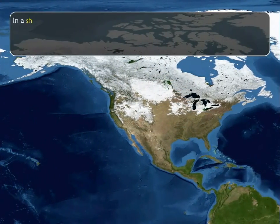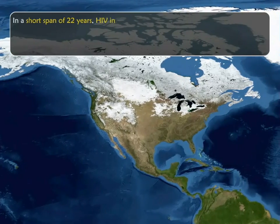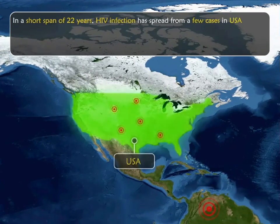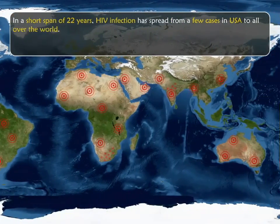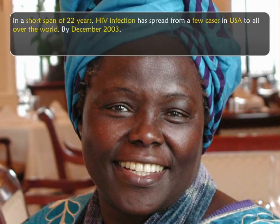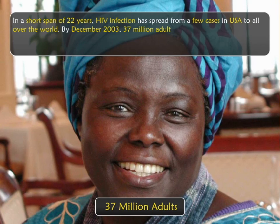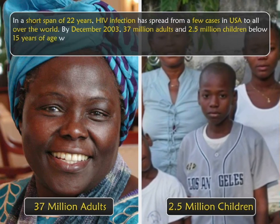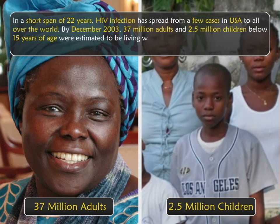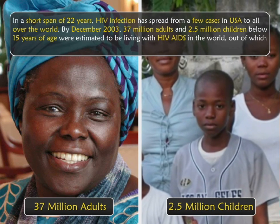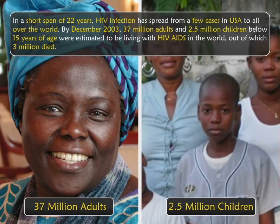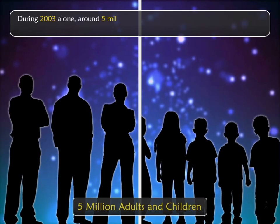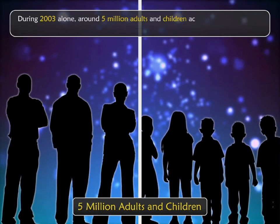In a short span of 22 years, HIV infection has spread from a few cases in the USA to all over the world. By December 2003, 37 million adults and 2.5 million children below 15 years of age were estimated to be living with HIV AIDS in the world, out of which 3 million died. During 2003 alone, around 5 million adults and children acquired HIV.